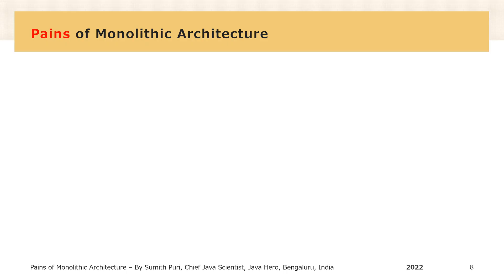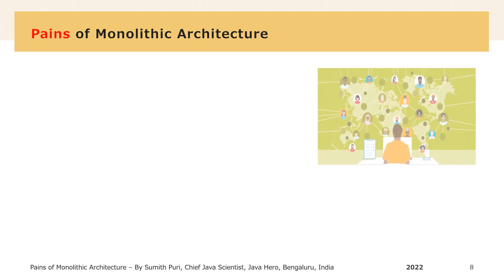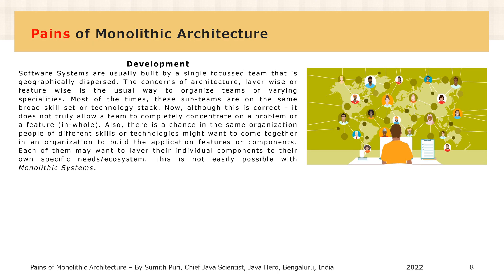One of the most important aspects of software development is the team developing the software. The concerns of architecture, layer-wise or feature-wise, is the usual way to organize teams of varying specialties. Most of the times, these sub-teams are on the same broad skill set or technology stack. Although this is correct, it does not truly allow a team to completely concentrate on a problem or feature in whole, because they have too many incoming or outgoing dependencies, standards or guidelines.